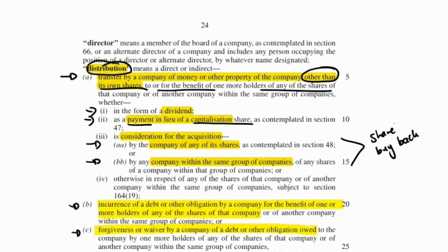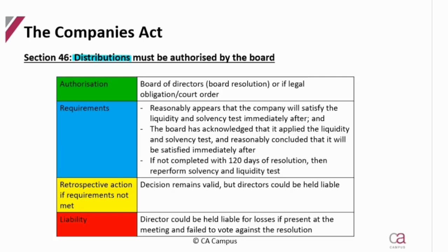The board must authorize the distribution because it will only affect shareholders, unless there is a legal or court order. Board authorization requires a majority of those present to vote in favor. The key requirement is that it must reasonably appear that the company will satisfy the liquidity and solvency test after the distribution.